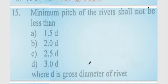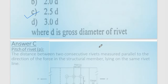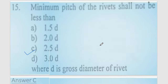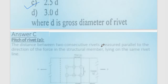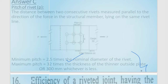Question 15: the minimum pitch of a rivet shall not be less than 2.5 times the nominal diameter d of the rivet. The maximum pitch is 32 times t or 300 mm, whichever is less. Option number C is correct. This is a very important provision from an objective examination point of view.